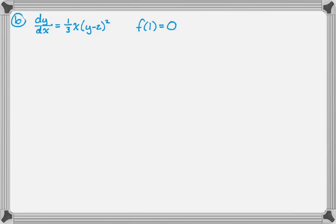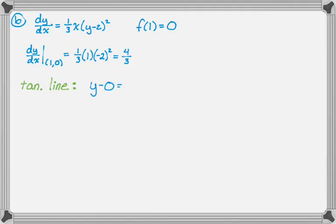In part B we still have the differential equation, and we're told f of 1 is equal to 0. We want to write the tangent line, and then we want to use it to approximate f of 0.7. To write a tangent line, I need the slope. So I'm going to evaluate dy dx at the ordered pair 1, 0, which will be 1 third, and I'm plugging in 1 for x, and then I'm plugging in 0 for y, gives me negative 2 squared, so this gives me 4 thirds. Then I can write the equation of the tangent line to be y minus 0, because that's the y coordinate, equals the slope, which is 4 thirds, times the quantity x minus 1.